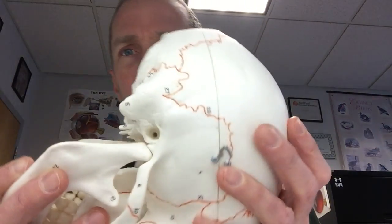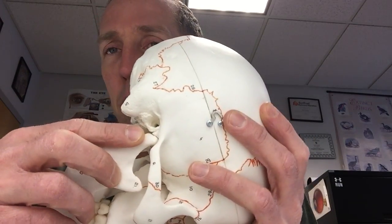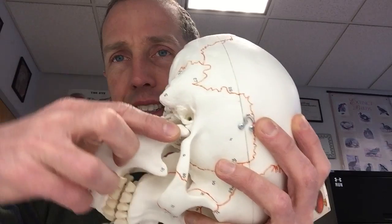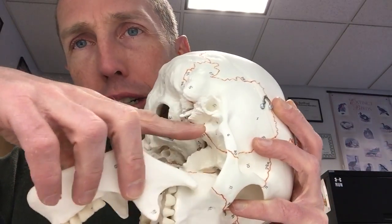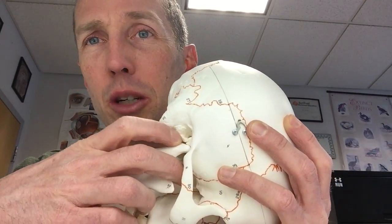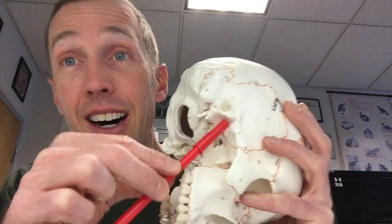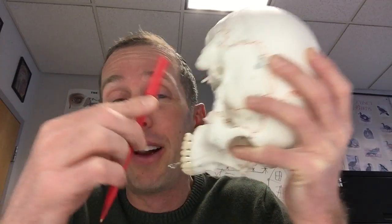Let me put the mandible back on. There's the mandible — the condyle of the mandible is articulating into that little depression right there. That depression, which is very near the acoustic meatus, is called the mandibular fossa. Remember, a fossa is a depression.